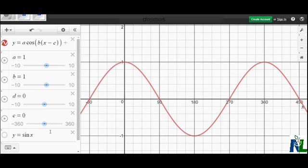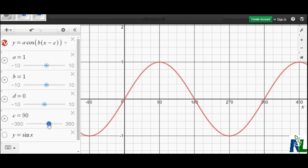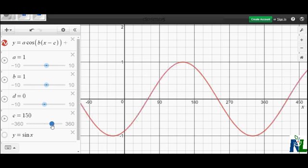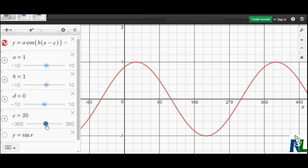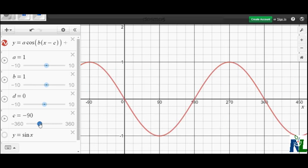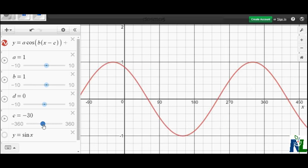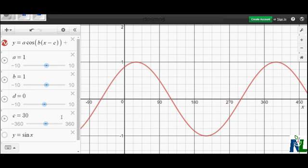Let's look at what the value of c does. So c has the ability to shift our graph left or right, depending on what's happening. So if I make c positive 30, then you'll notice that the graph for cosine shifts over 30 degrees.